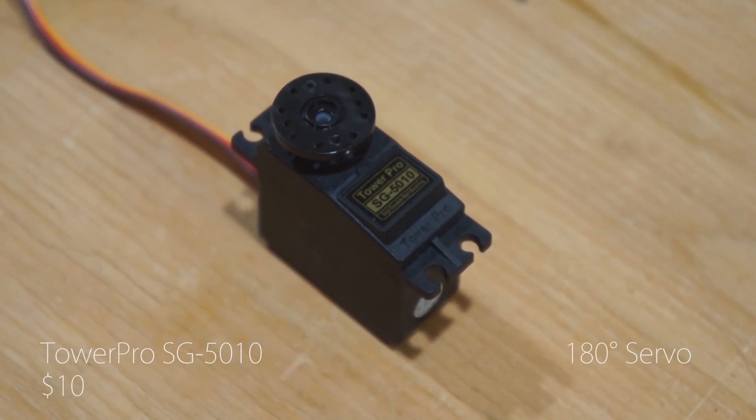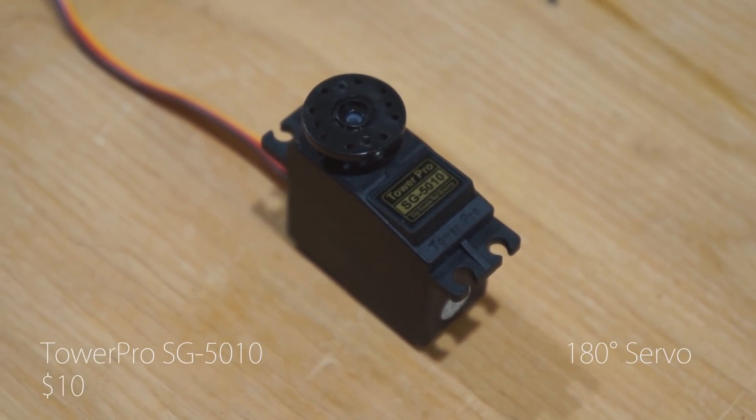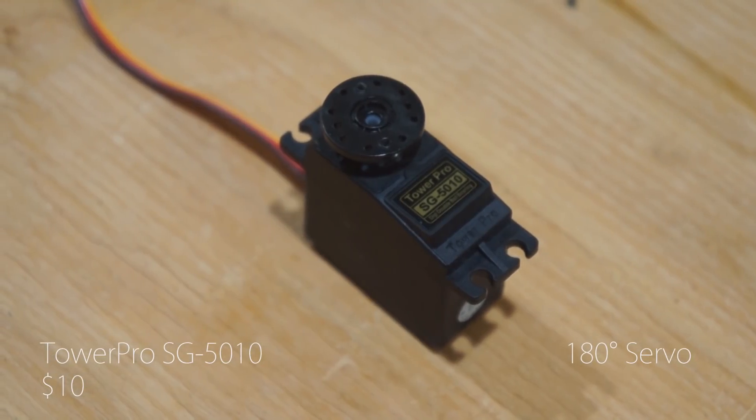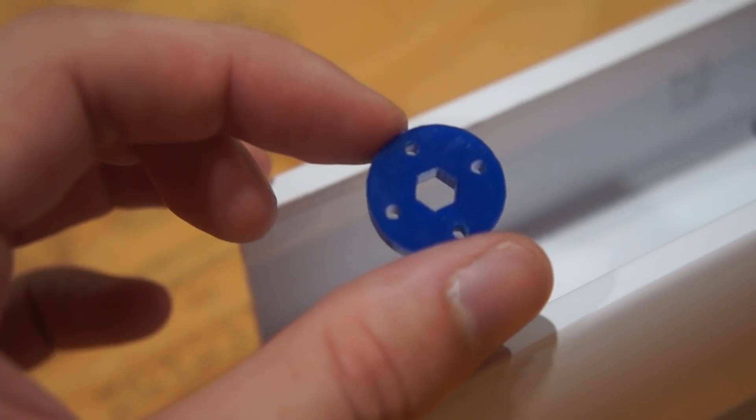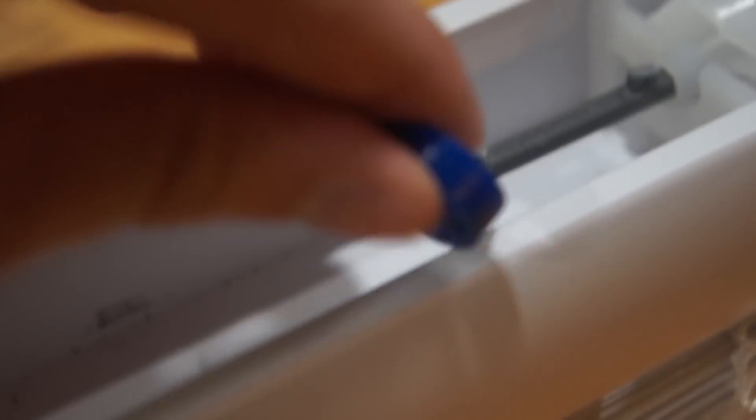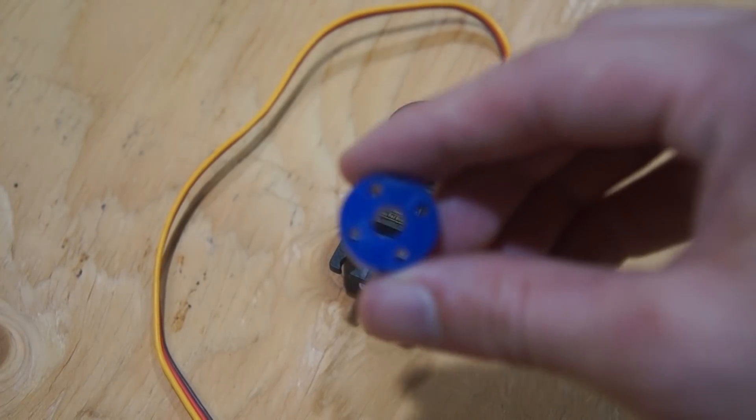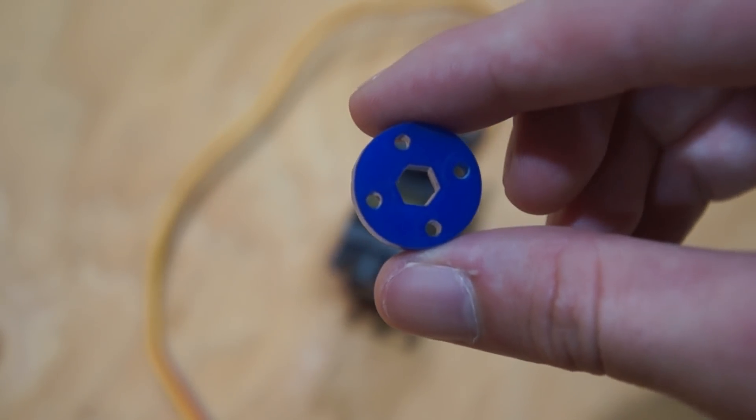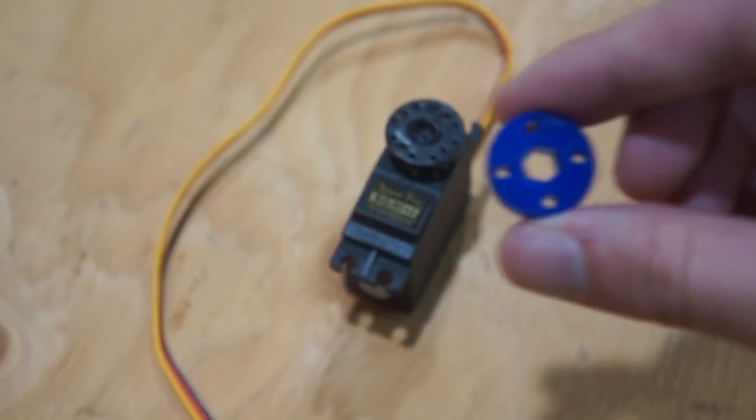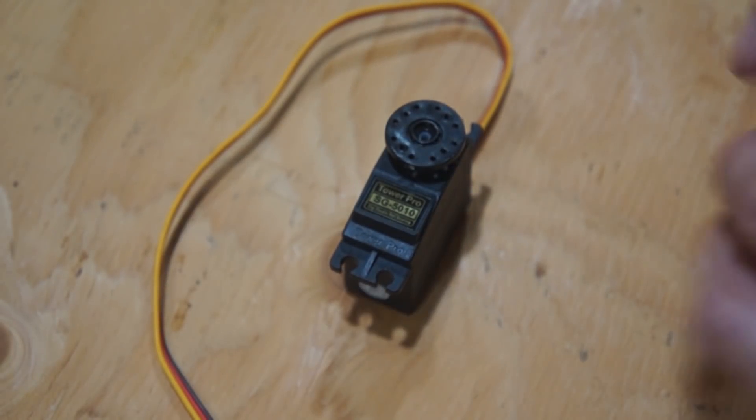This here is the Tower Pro SG5010 high torque 180 degree servo. Here's the piece that I laser cut from quarter inch acrylic. This will fit right on to the axle piece. I have that hexagonal shape and the screw holes on the edges.